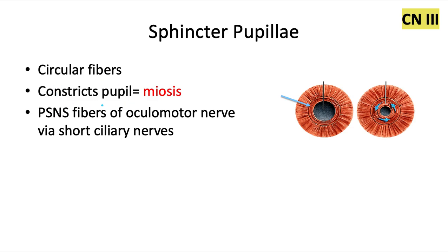This muscle constricts the pupil, which is called miosis. The parasympathetic nerve fibers of the oculomotor nerve via the short ciliary nerves innervate this muscle. It makes sense that this is a parasympathetic action — something linked with a rest-and-digest or feed-and-breed response — because when the parasympathetic nervous system fires, it causes this smooth muscle to activate and the pupil to constrict.